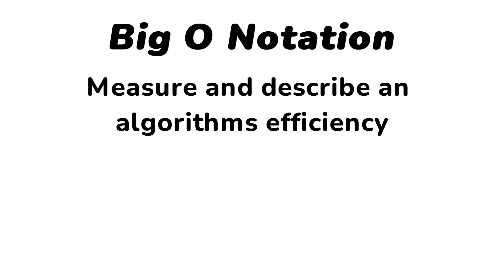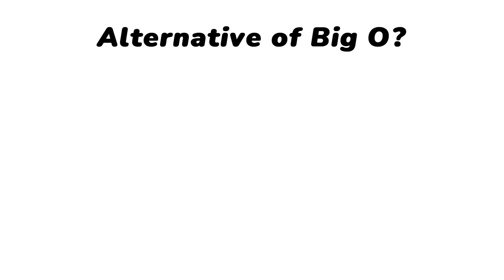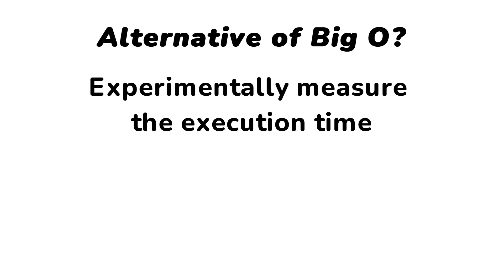Let's say we don't have something like the Big O notation. How would we describe an algorithm's performance? One way to do that could be experimentally measuring the execution time of the program. We could write the program that implements the algorithm and time how long it takes, but this is obviously not the most convenient way to measure time.